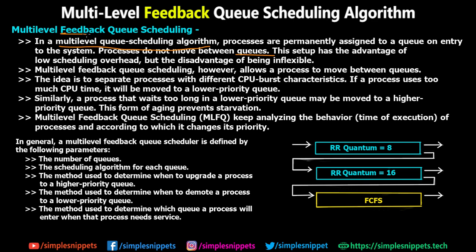This is where the feedback mechanism comes into picture. The idea is to separate processes within different CPU characteristics. If a process uses too much CPU time, it will be moved to a lower priority queue. Similarly, if a process waits too long in a lower priority queue it may be moved to a higher priority queue, and this form of aging prevents starvation. This introduces flexibility, meaning different processes can be moved between different queues.